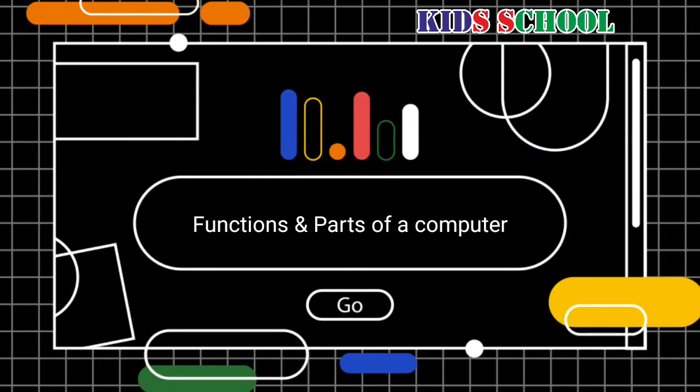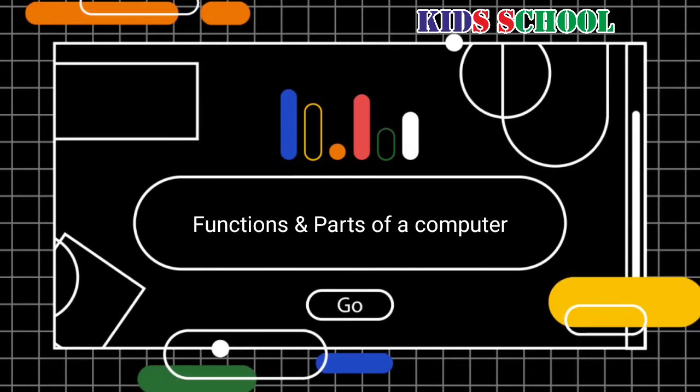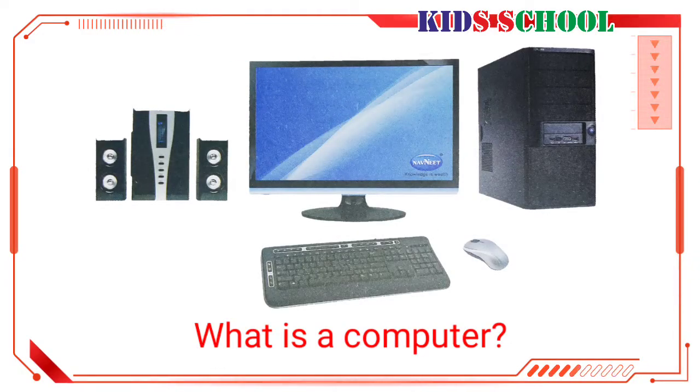So dear students, now we are going to learn the first lesson of Introduction to Computers and today's topic is Functions and Parts of a Computer. First we will see the definition of computer. A computer is an electronic machine which is made up of devices used for input, processing, storage, and output.